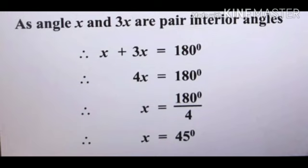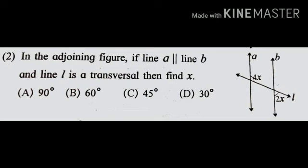the interior angles are supplementary, that is the sum of the angles is 180 degrees. Therefore, 3X plus X is equal to 180 degrees. When we add 3X plus X we get 4X, so 4X is equal to 180 degrees. Therefore, X is equal to 45 degrees.